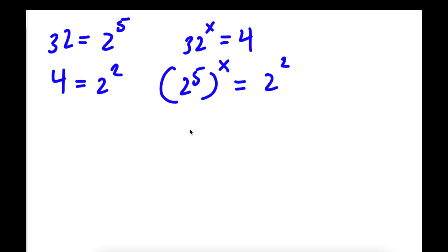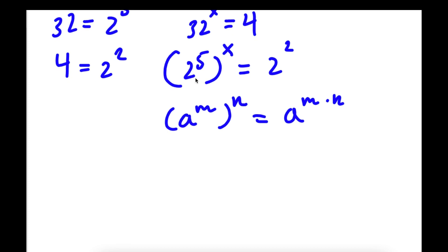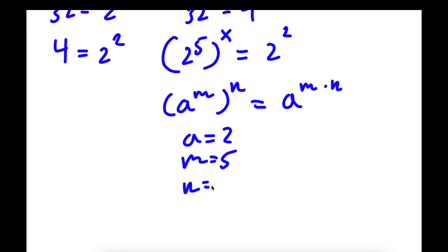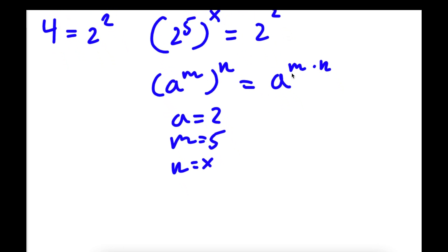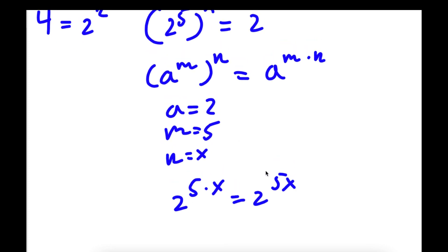Now, if I have something in the form a to the power of m to the power of n, this is equal to a to the power of m times n. So in this case, for 2 to the power of 5 to the power of x, a would equal 2, m would equal 5, and n would equal x. So if I put it in the form a to the power of m times n, I get 2 to the power of 5 times x, which is equal to 2 to the power of 5x.